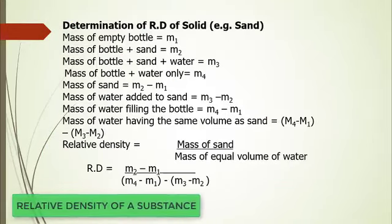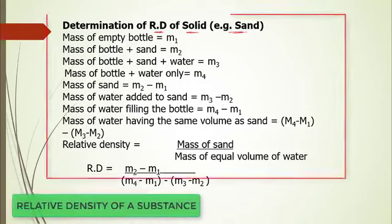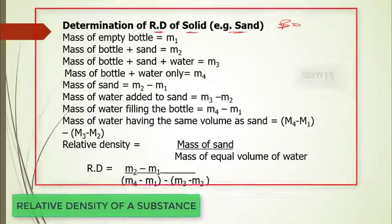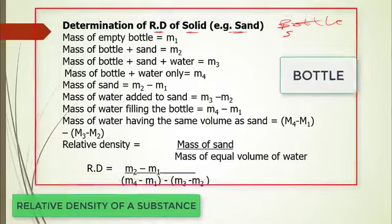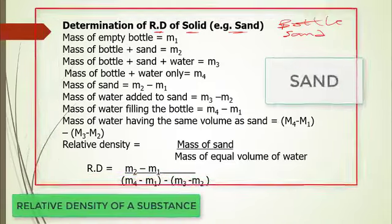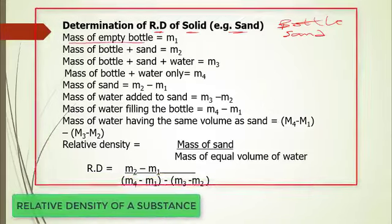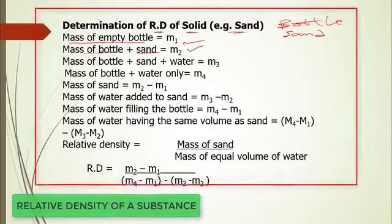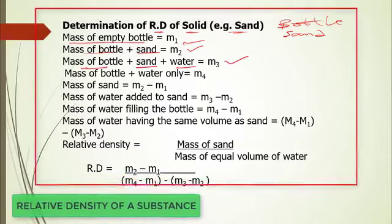The relative density of a substance is the mass of that substance over the mass of an equal volume of water displaced by that substance. To determine the relative density of solids such as sand, we need a bottle. First, we get the mass of the empty bottle (m1), then the mass of the bottle plus sand (m2), then the mass of the bottle plus sand plus water (m3).